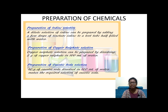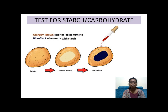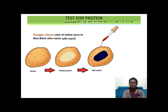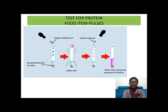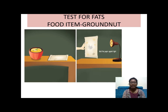Now we are going to use these chemicals to do tests. Test for starch or carbohydrate: take a potato, cut it into two halves, use a dropper to put some drops of iodine solution on the cut surface, and observe the blue-black color — this confirms the presence of starch and carbohydrate. Test for protein: take pulses, grind and mash them, add some water, add copper sulfate solution, shake it, then add caustic soda solution. After a few minutes, observe a violet color, which confirms the presence of proteins.